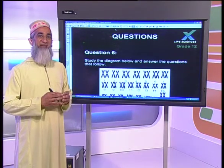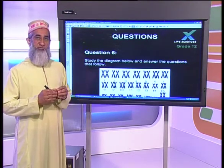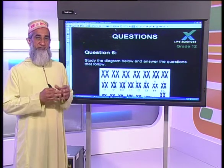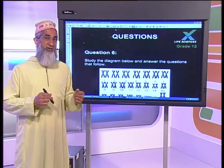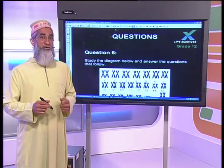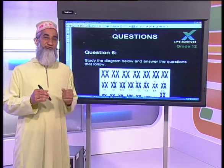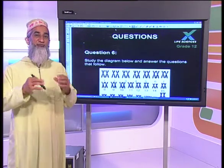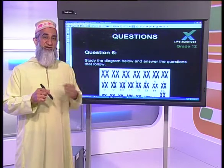Polyploidy is a condition where all the cells in a particular organism have more than two sets of chromosomes. During meiosis, if chromosomes do not separate — mainly during anaphase — one of the gametes would have an extra set of chromosomes, making it diploid instead of haploid, meaning 2n instead of n. Normally, gamete production reduces chromosome number to half, so that when gametes come together during fertilization, the resulting individual has the full complement of chromosomes.